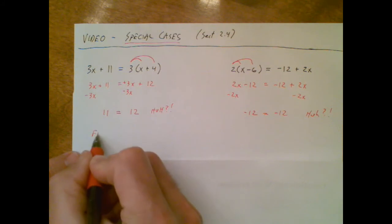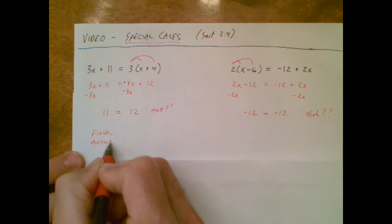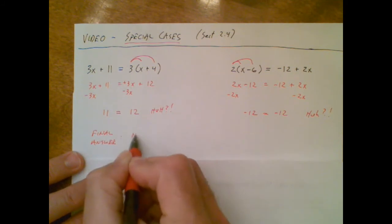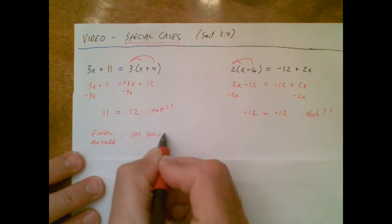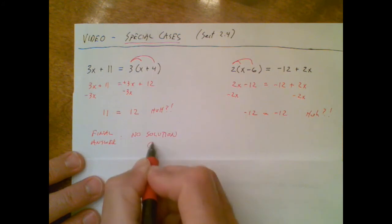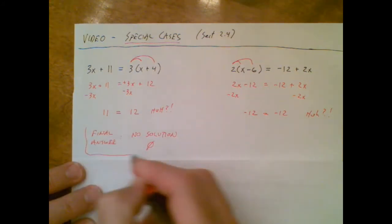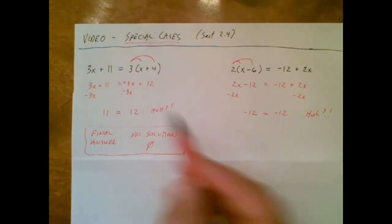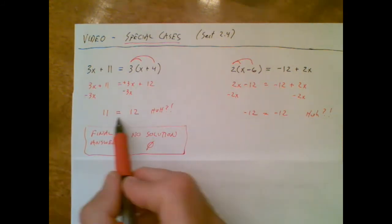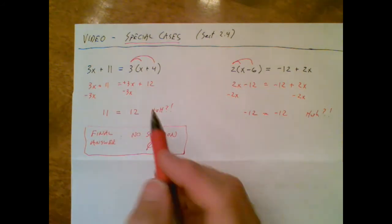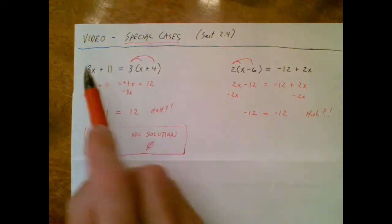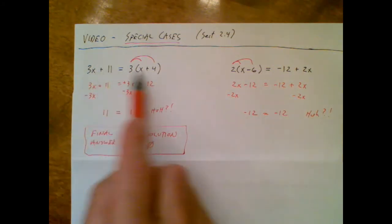Sometimes in math you use that symbol. Either one works. When you're left with no variable and something that doesn't make sense, 11 certainly does not equal 12. That's the equation telling you there is no solution.